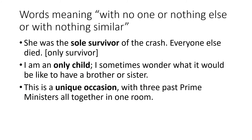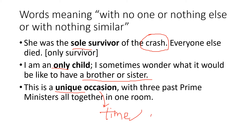We can also use sole, which means the only person — for example, 'she was the sole survivor of the crash,' maybe a plane crash, and everyone else died except her. 'An only child' means that child has no brother or sister. And 'a unique occasion' — occasion means time or moment — refers to a very rare occasion that you may not be able to experience again in your lifetime.